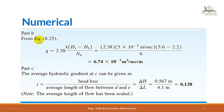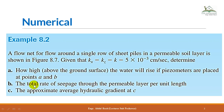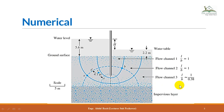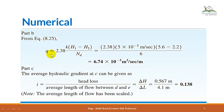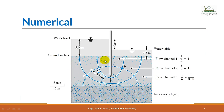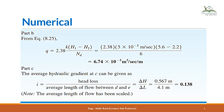Moving to part b, the total rate of seepage per unit length needs to be determined. As discussed in the previous tutorial, the total discharge is given by the equation Q = 2.3 · k · (h1 − h2) / Nd, where k is the hydraulic conductivity, h1 is the upstream head, h2 is the downstream head, and Nd is the number of potential drops. Substituting all given values yields the total seepage discharge.